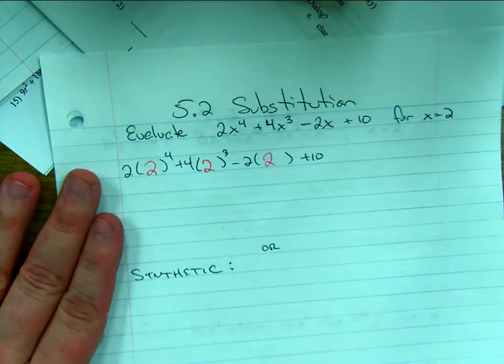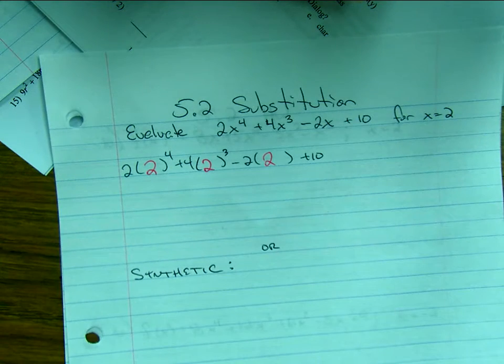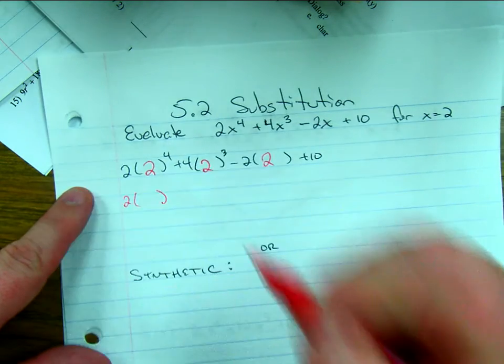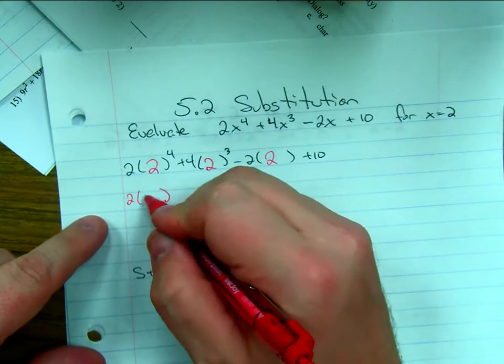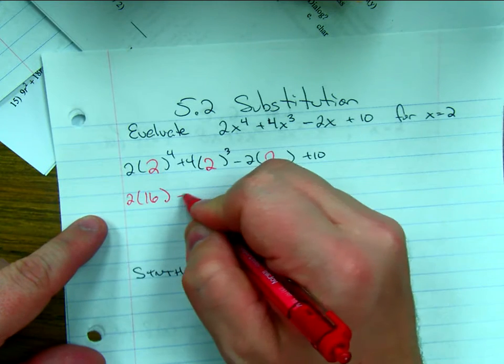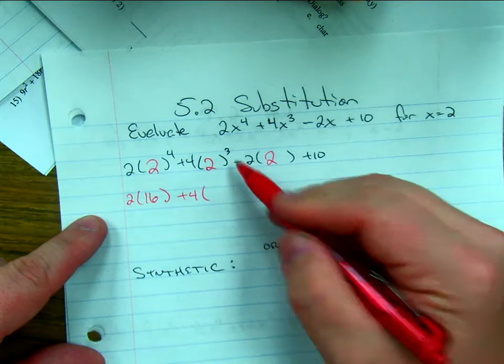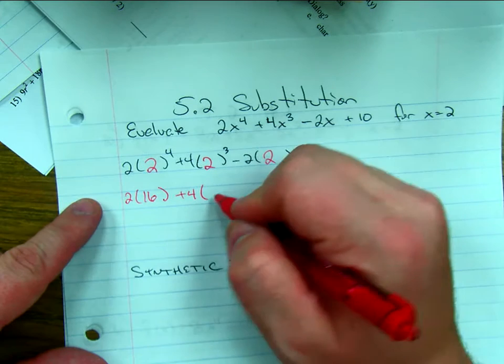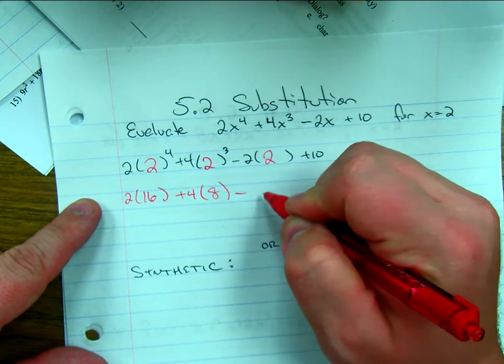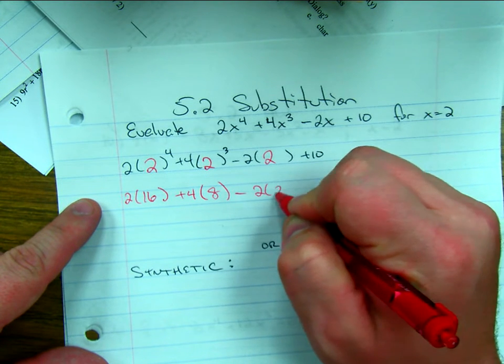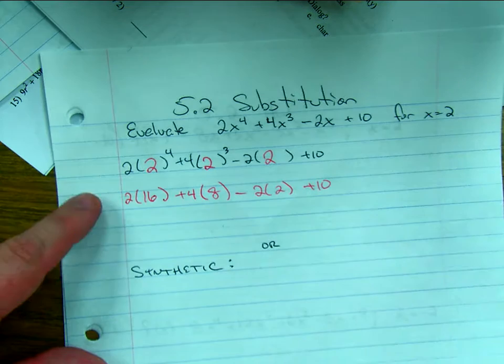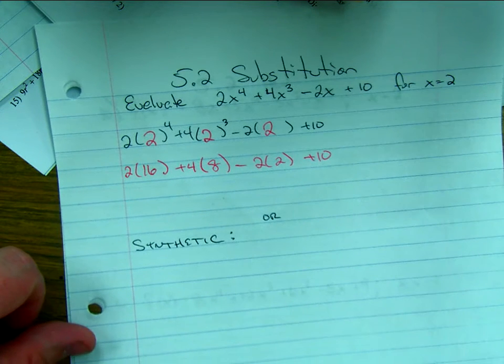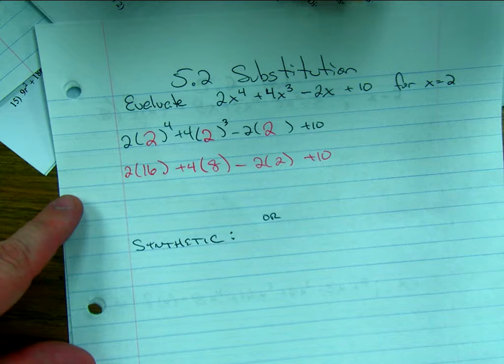Then you deal with each term individually. This is 2 times 2 to the fourth power, that's 2 times 2 times 2 times 2, that's 16, plus 4 times 2 to the third power, 2 times 2 times 2 is 8, minus 2 times 2 plus 10.